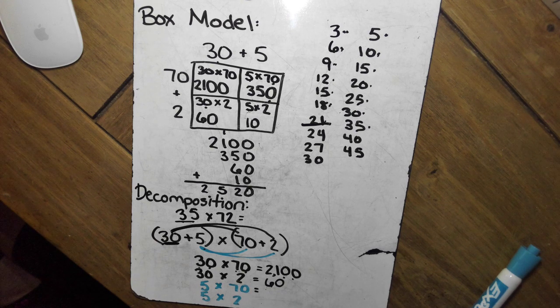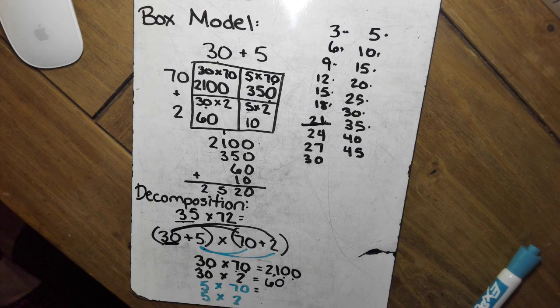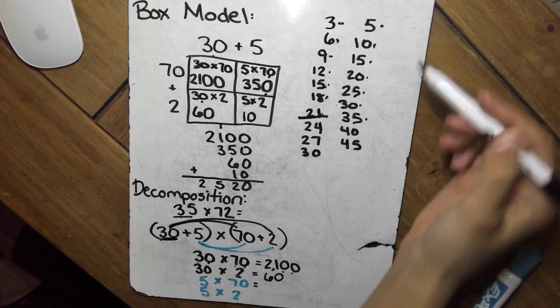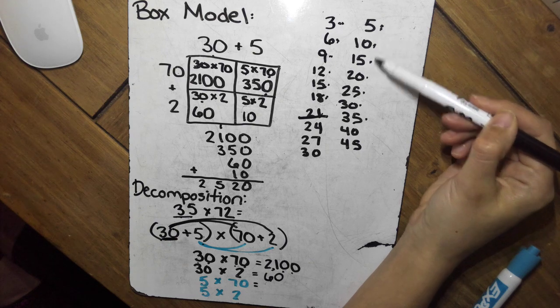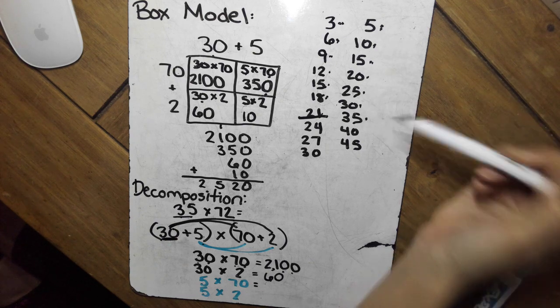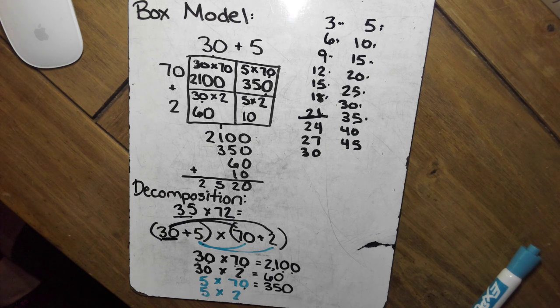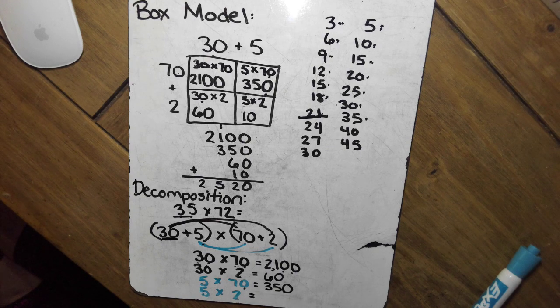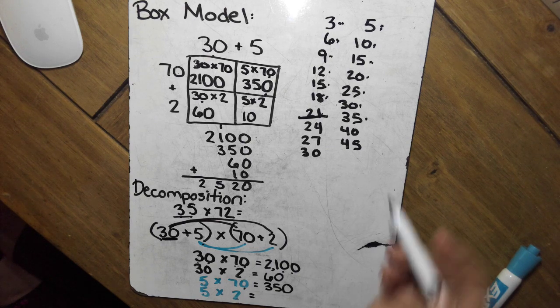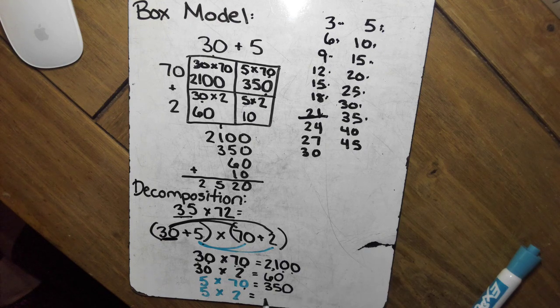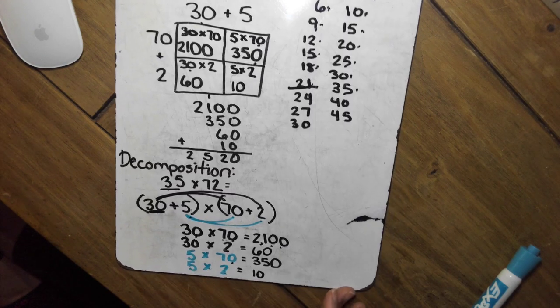So next one we have 5 times 70. So go back up here. 1, 2, 3, 4, 5, 6, 7. 35. Since we're multiplying by 10, it's 350. Last one is 5 times 2. 1, 2, 10.